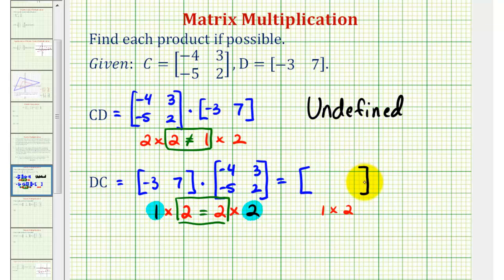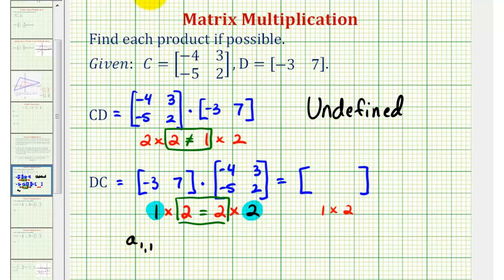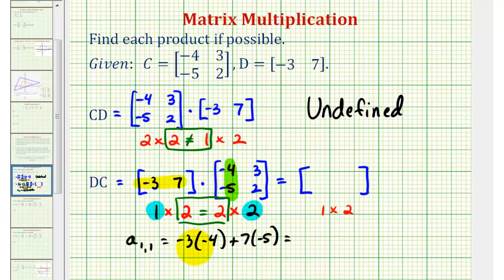Now we can find the elements in each position. The first element is in row one, column one. To find this element, we use a row from the first matrix and a column from the second matrix. To find the element in row one, column one, we find the product of row one from the first matrix and column one from the second matrix. We find the product of the first elements, then the product of the second elements, then find the sum. So we have negative three times negative four, plus positive seven times negative five, which is positive 12 plus negative 35, equal to negative 23.